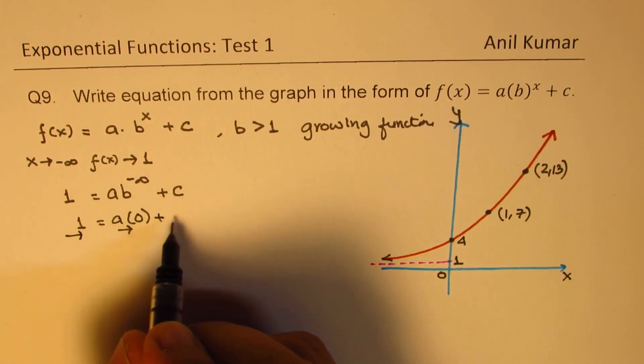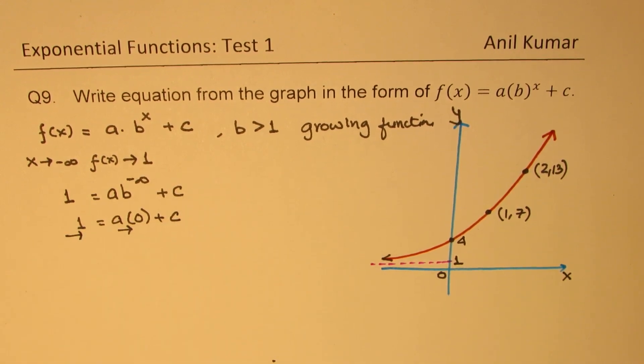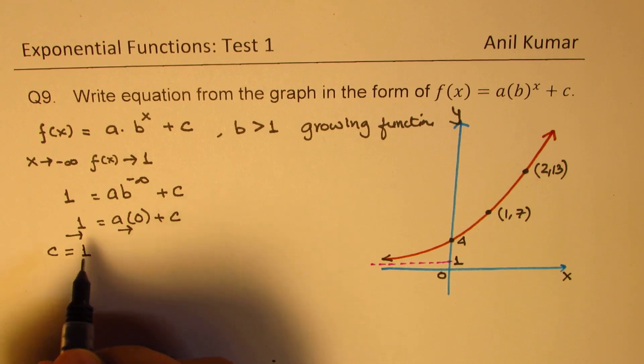And so we see that the value of c should be 1. So that gives you c equals to 1. Is that clear to you?